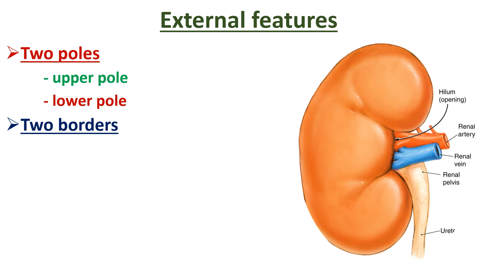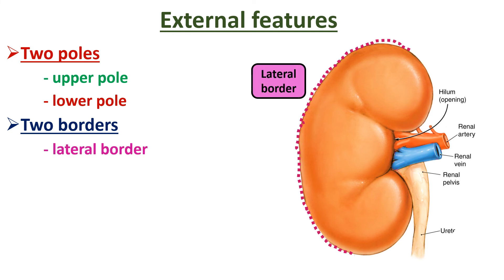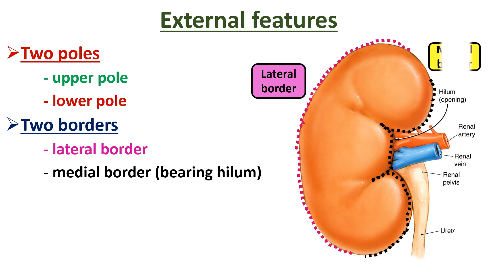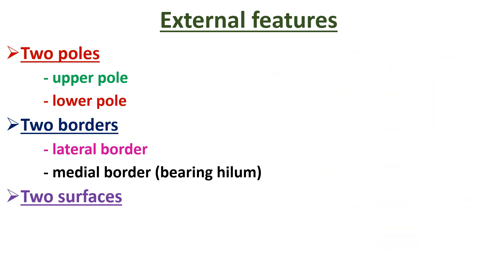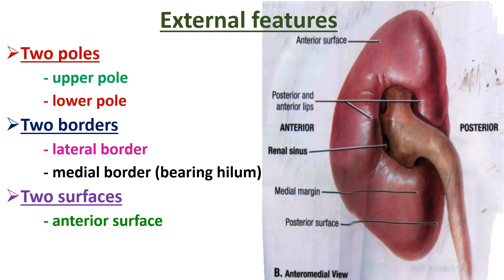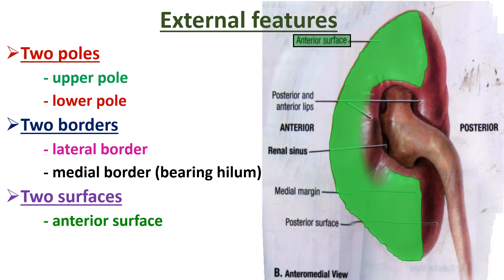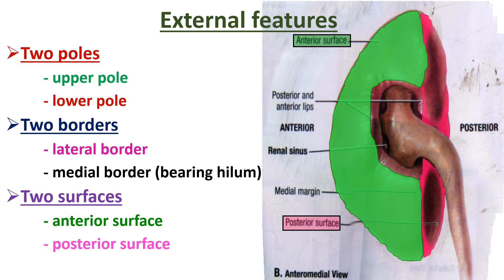Each kidney has two borders: the lateral border, which is convex and thick, and the medial border, which shows the presence of the hilum in the middle. At the hilum, structures from before backward are: renal vein, renal artery, and pelvis of ureter. The kidney also has two surfaces: the anterior surface, which is irregular and directed anteriorly and laterally, and the posterior surface, which is almost flat and directed posteriorly and medially.